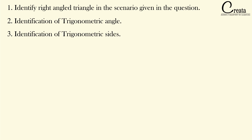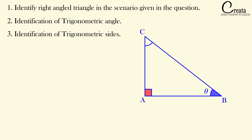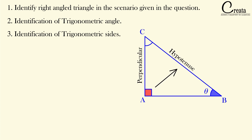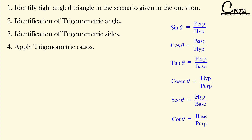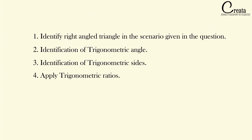The third step is identification of the trigonometric sides with respect to the chosen trigonometric angle. The sides are: perpendicular — the side opposite to the trigonometric angle; hypotenuse — the side opposite to the 90 degree angle; and the remaining side is the base. The fourth step is the application of the trigonometric ratios — once you have the trigonometric sides, you can apply the appropriate ratio formulas. This is the basic understanding of the topic of Height and Distance.